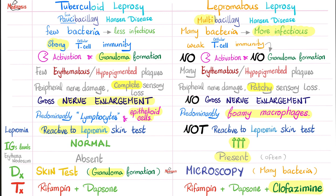Erythema nodosum is absent with tuberculoid leprosy but may be present with lepromatous leprosy. To confirm the diagnosis: Mycobacterium leprae is unculturable on artificial medium, so culture will not work. To diagnose tuberculoid leprosy, you need the clinical picture and the lepromin skin test to look for the induration — the granuloma. But since there is no granuloma with lepromatous leprosy, take advantage of the many bacteria and look under the microscope. Lepromatous leprosy is more severe, having many bacteria yet weaker immunity, so it needs a combination including an extra medication called clofazimine. To treat tuberculoid leprosy: rifampin and dapsone. For lepromatous leprosy: rifampin, dapsone, and clofazimine.